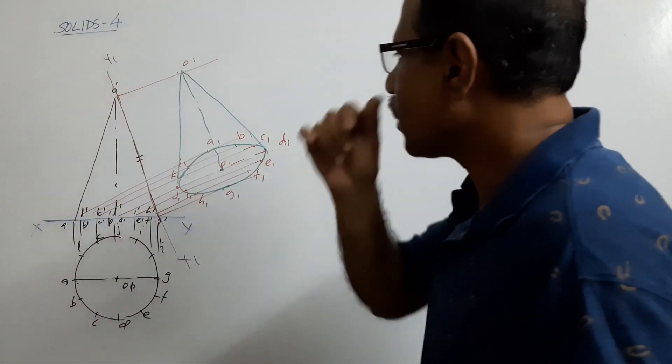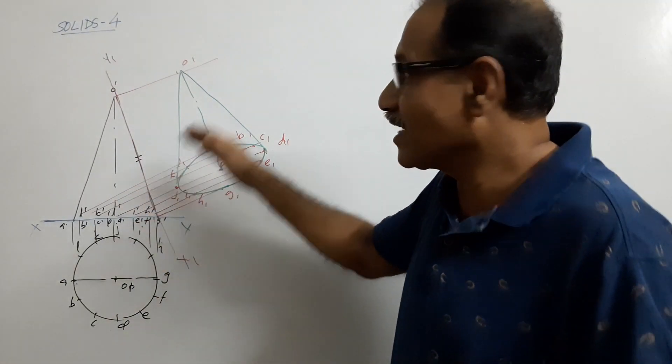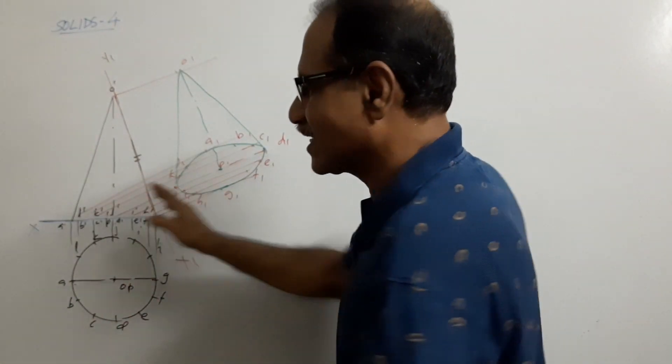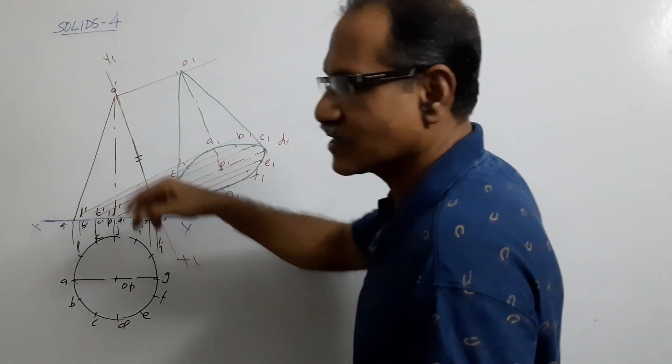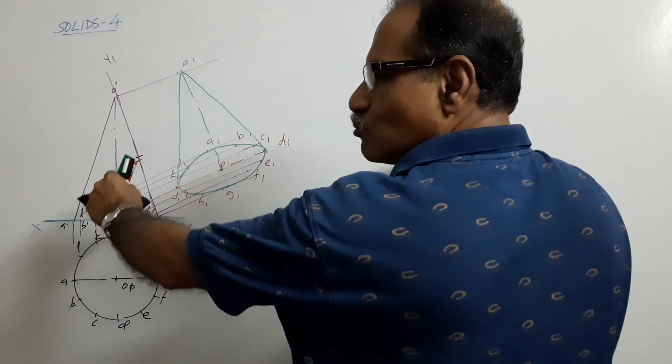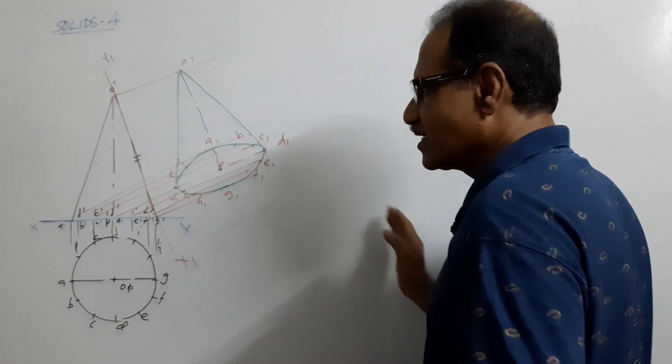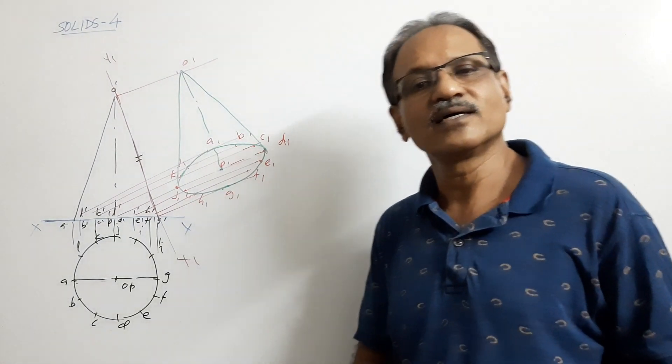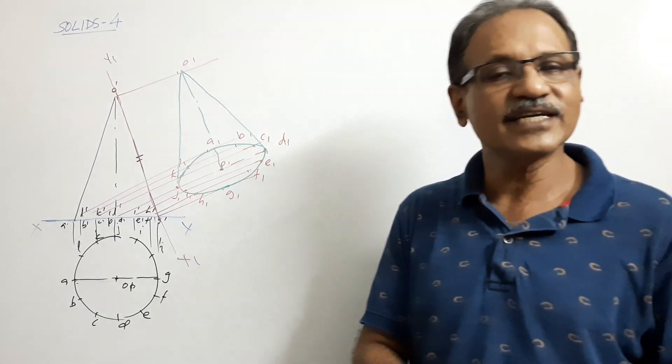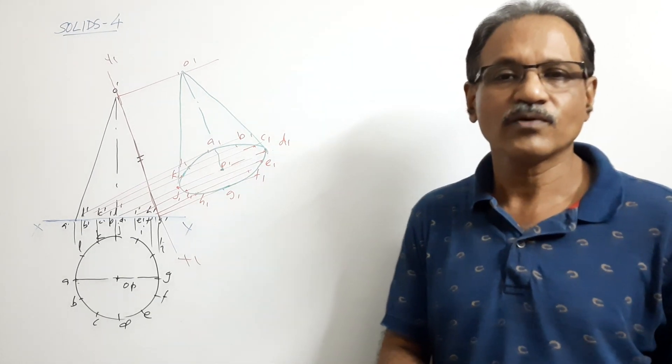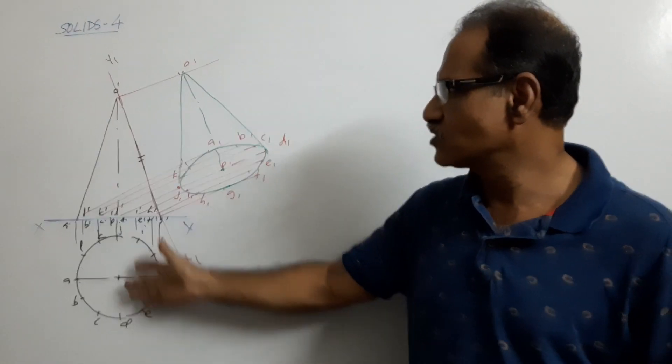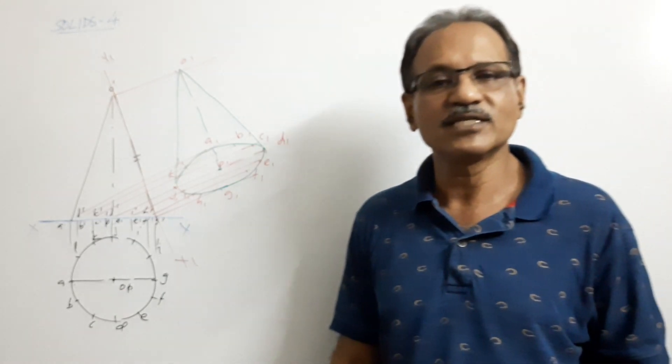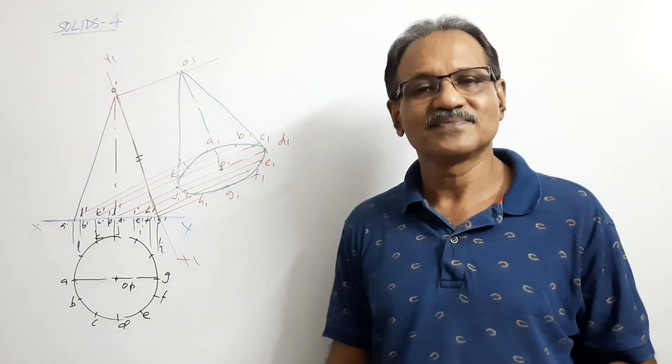Now after drawing it, it will be a little bit uncomfortable because the plan is coming on this side. What do you need to do? Rotate XY so that XY becomes horizontal with X on the left side and then Y on the right side. This is auxiliary projection of the cone lying on one of its generators with axis parallel to VP. The diameter of the cone can be specified and the elevation height of the cone also can be specified. It can be of any dimension. Thank you.